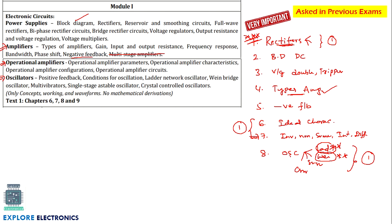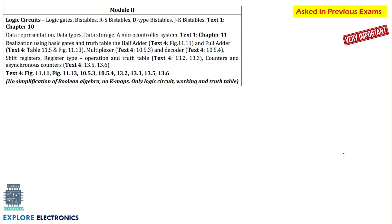They may also ask the condition for oscillation — there are two conditions to write with a little bit of explanation. In summary for Module 1: one question is from rectifiers, one from amplifiers (types of amplifiers), and if you read the two main oscillators you may get one question too. These are the very important questions in Module 1. Coming to Module 2, which is digital electronics.